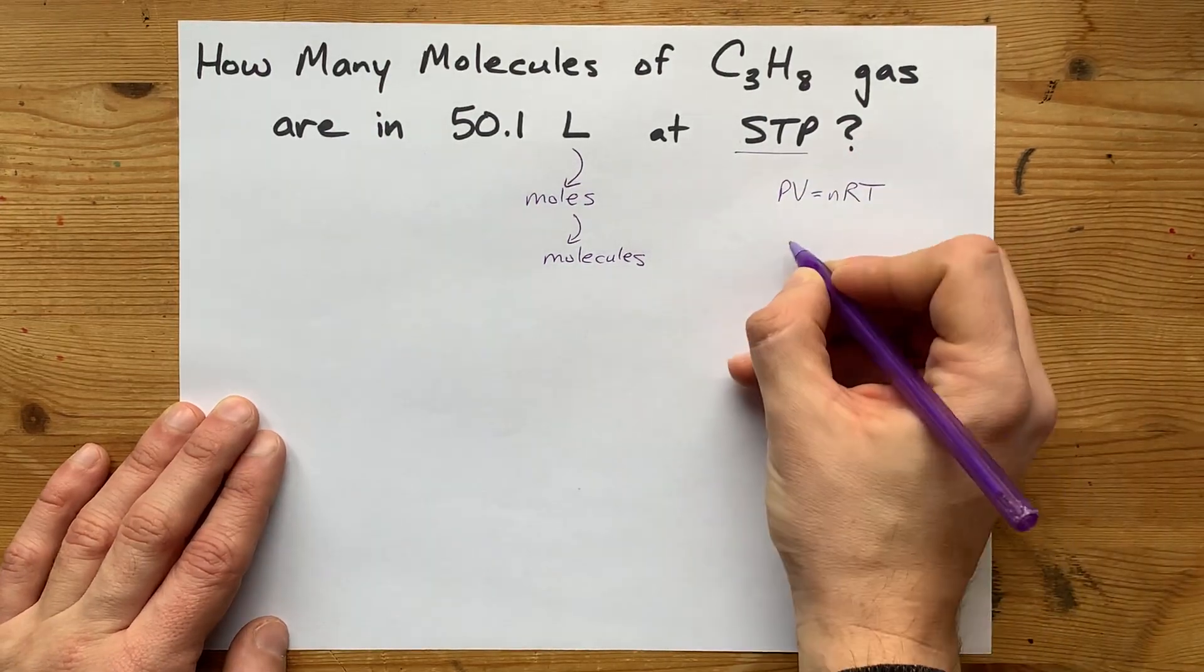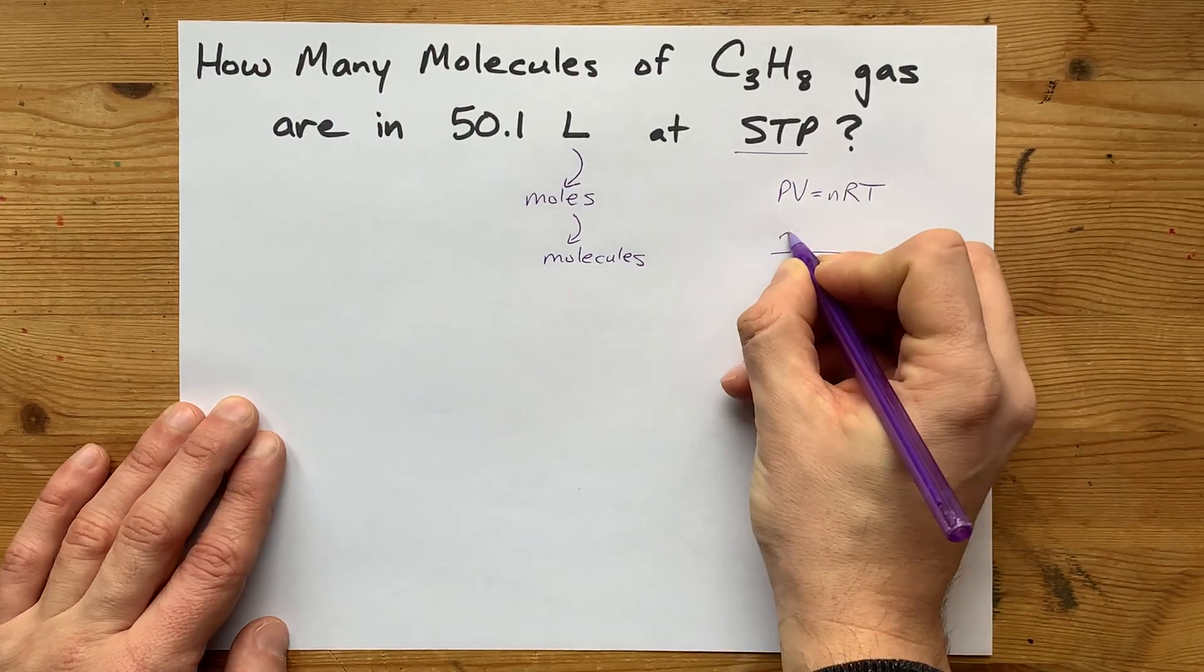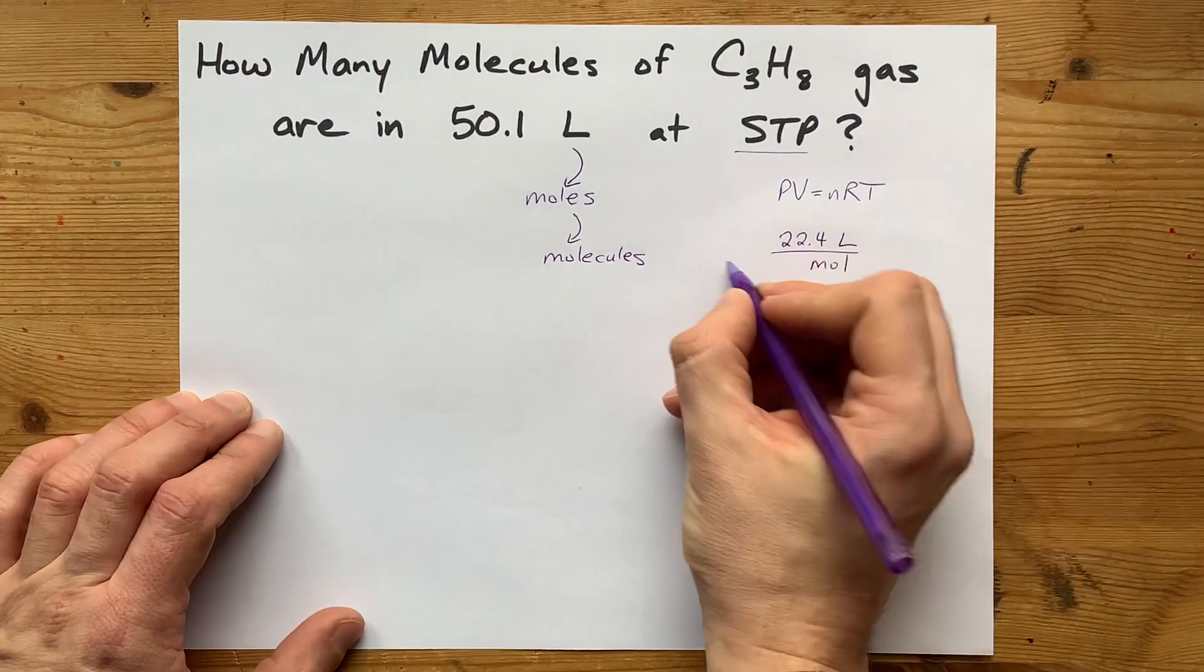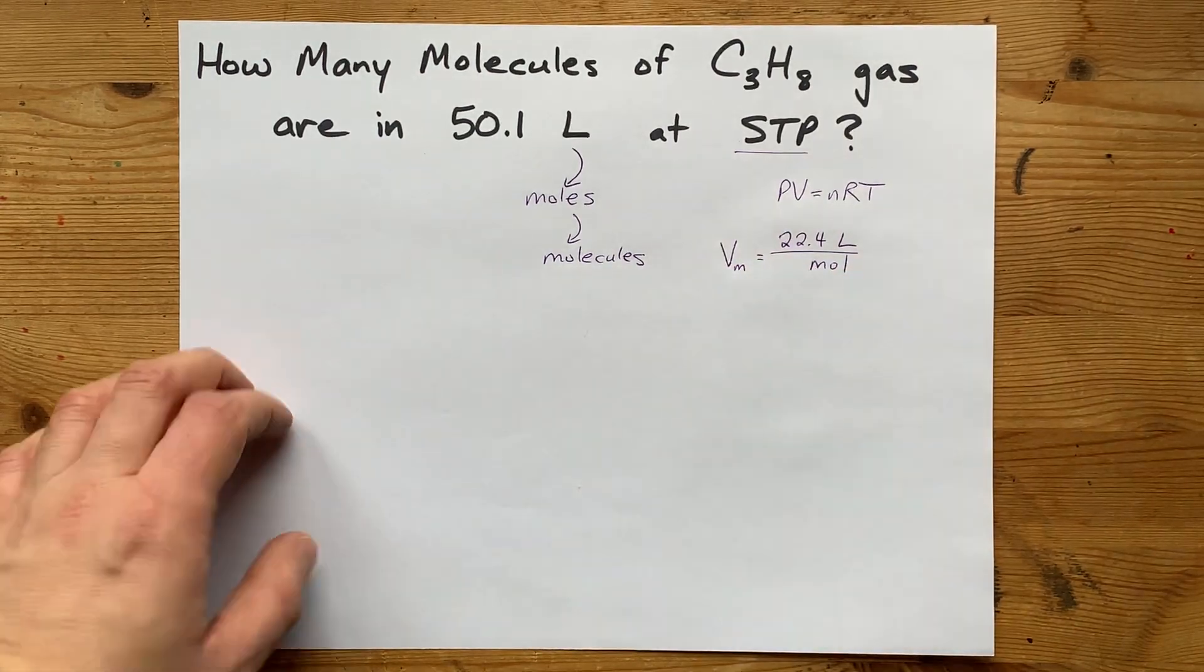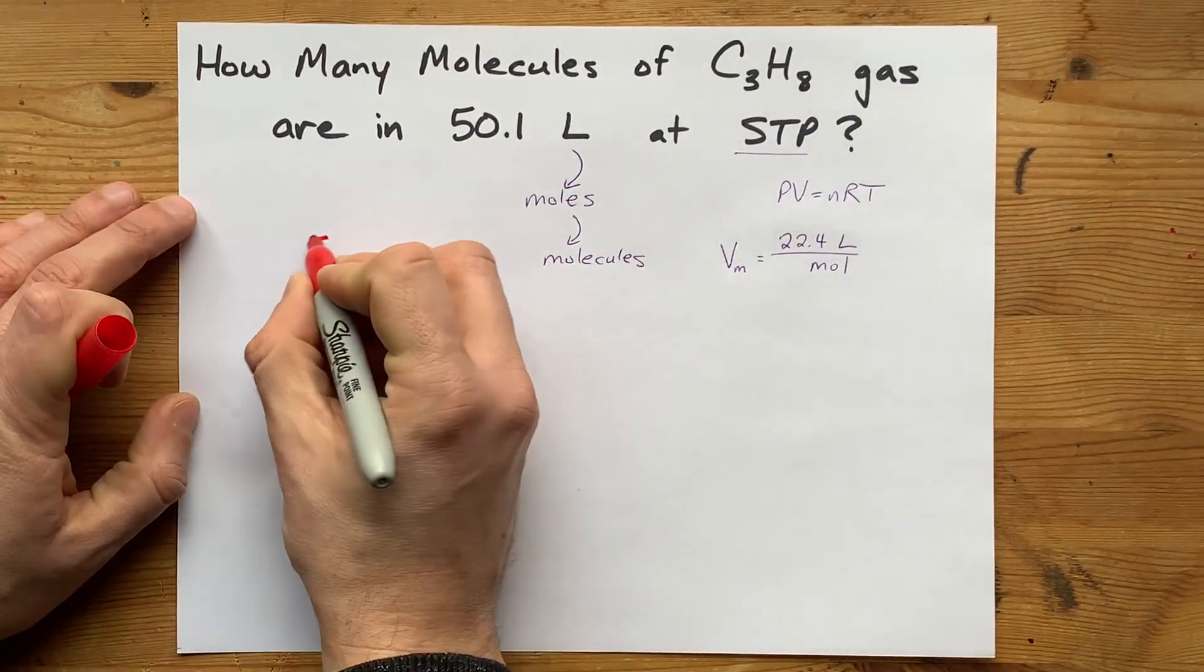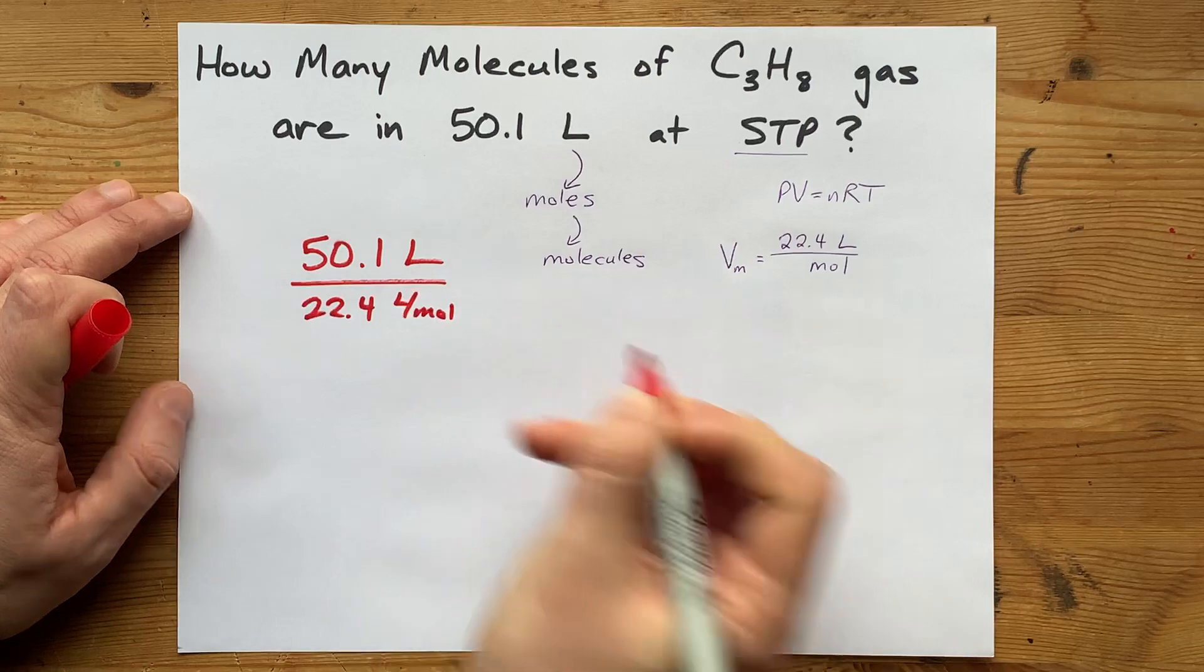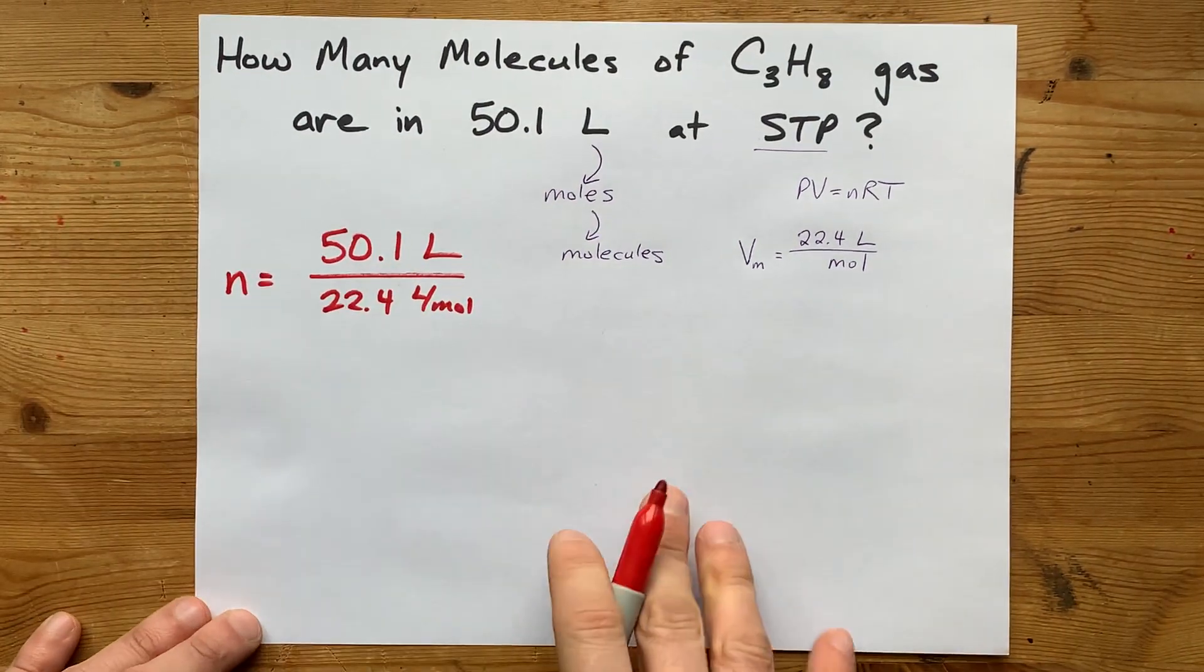I also happen to know a shortcut called molar volume. At STP, every single mole of gas takes up 22.4 liters. That's just a constant that you may have been introduced to. This here is called the molar volume, which I believe is called V little m sometimes. The idea being, if you're given liters,